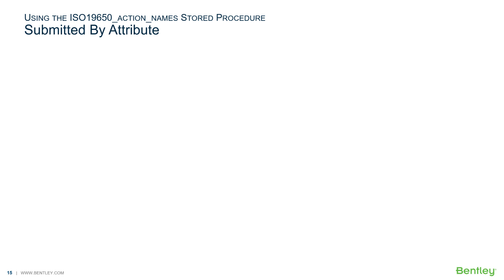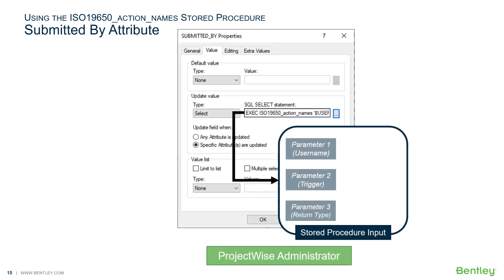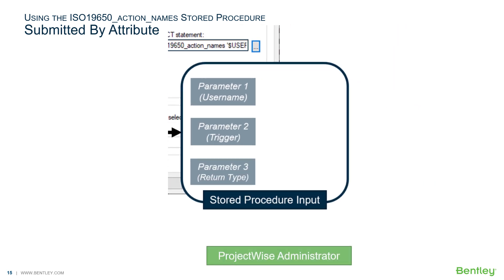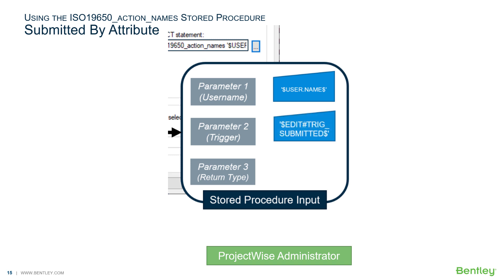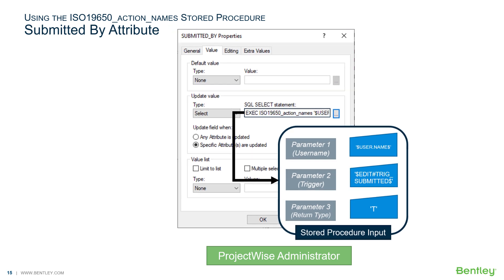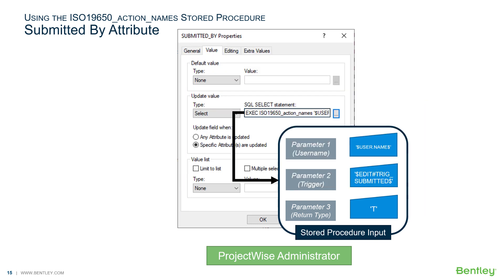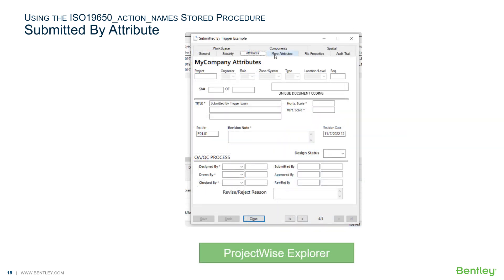Let's look at the three attributes related to submitted by. In ProjectWise Administrator, the update value for the submitted by attribute uses the stored procedure. The inputs are as follows: username will be the current user, the trigger will be the current value of the trig submitted attribute, and the return type will be set to T. In addition, the field update is configured to only occur if the trig submitted attribute is changed. In ProjectWise Explorer, let's see how this looks.